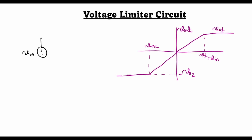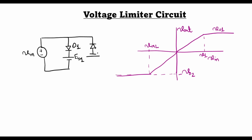We take the input voltage and connect one diode followed by a battery — let's call this battery voltage Eb1. In parallel with this connection, we connect a diode in the reverse polarity, followed by another battery also in the reverse polarity, with its negative terminal first, and we call this battery voltage Eb2. With this circuit we can achieve the desired input-output characteristics.